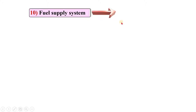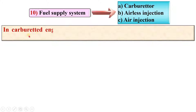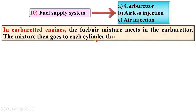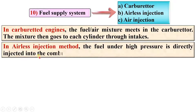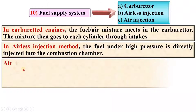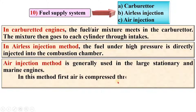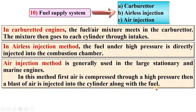According to the fuel supply system, IC engines are classified as carbureted, airless injection, and air injection engines. In carbureted engines, the fuel-air mixture is formed in the carburetor and then goes to each cylinder through the intake. In airless injection, fuel under high pressure is directly injected into the combustion chamber. In air injection, used in large stationary and marine engines, air is first compressed to high pressure and then a blast of air is injected into the cylinder along with the fuel.